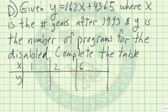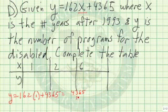Let's take an application, given y equals 162x plus 4,365, where x represents the number of years after 1993, and y is the number of programs for the disabled. Suppose we want to complete this table. Notice we have x is 1, x is 2, x is 6. We could have other values as well. Well, each one we do separately. y equals 162. We replace the x value with 1 plus 4,365. So 1 times this is 162. So we're taking 4,365 plus 162. So we have 4,527.